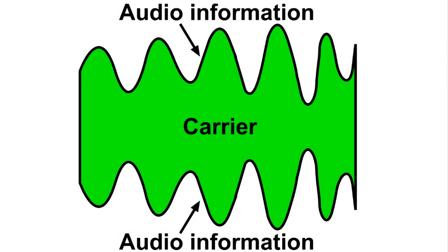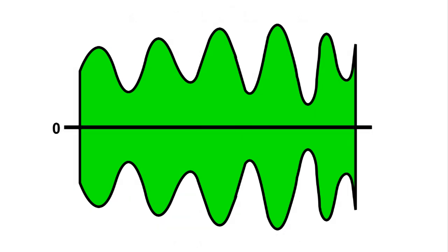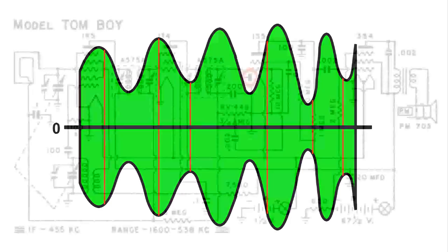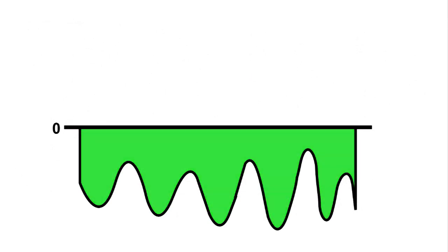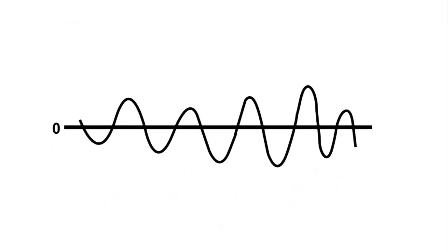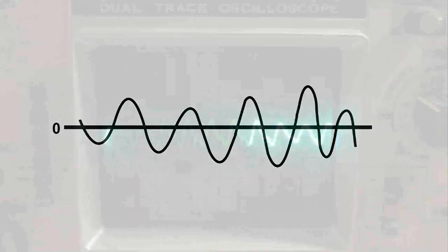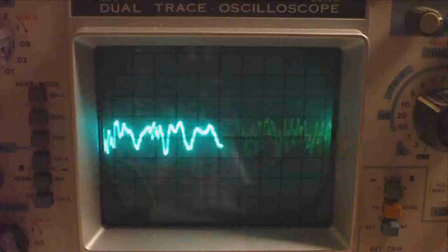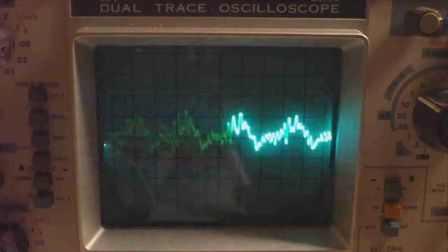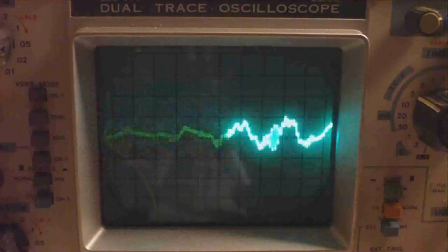I hope this video has helped you understand how an amplitude modulated carrier gets detected in a radio like this and takes this information and changes it into audio information that can be amplified. Thanks for watching.